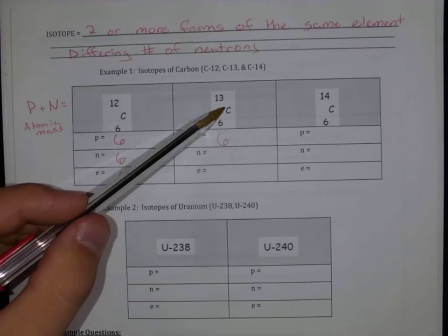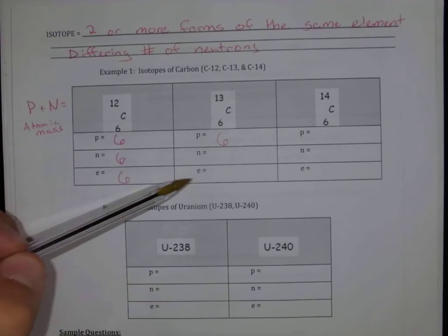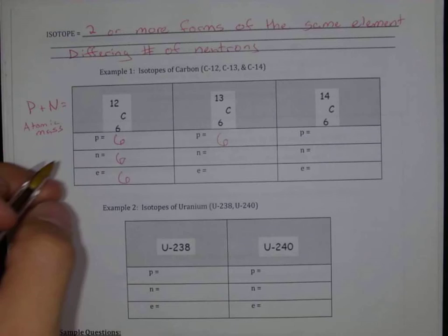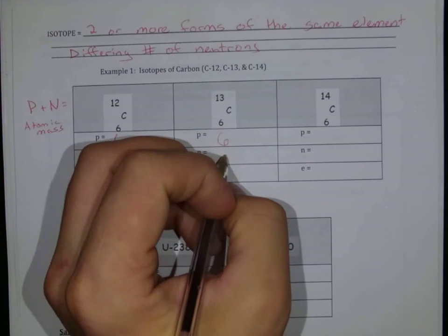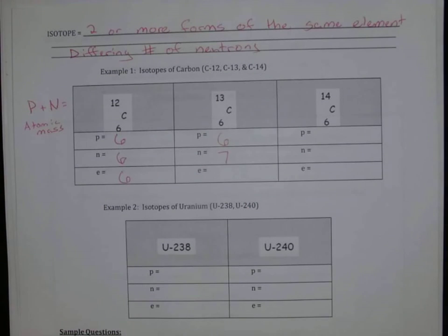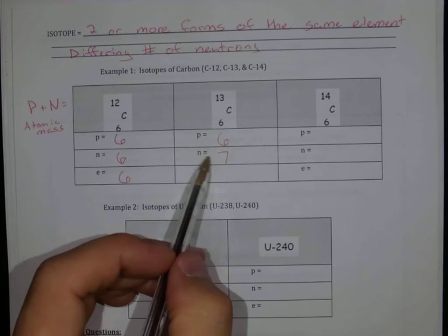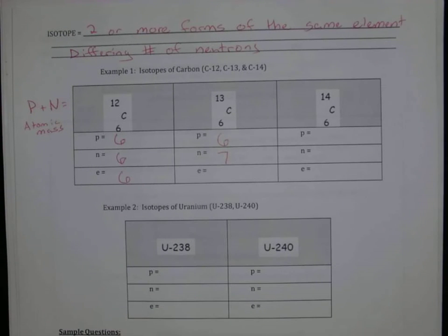Our atomic mass is going to be the number of protons and neutrons added together. So 13 minus 6, now we have seven neutrons. It's still a carbon atom, it has a different weight, a different mass because we have a different number of neutrons. It doesn't change the element, it only changes the mass.